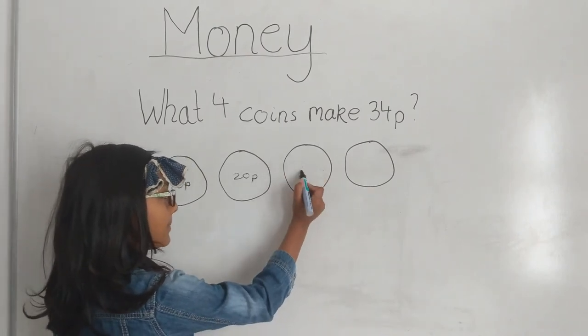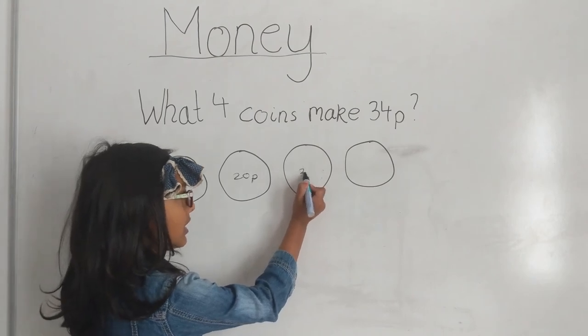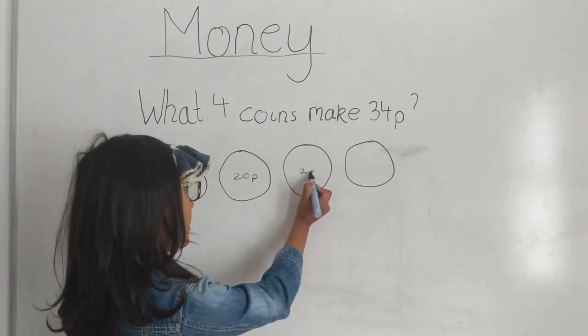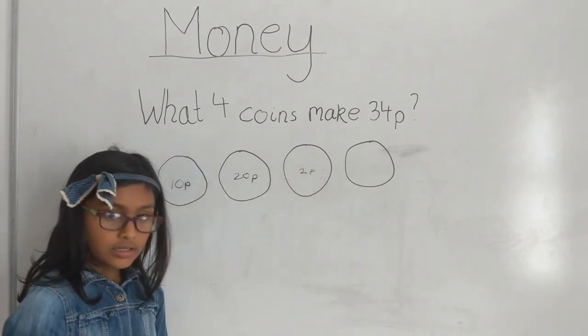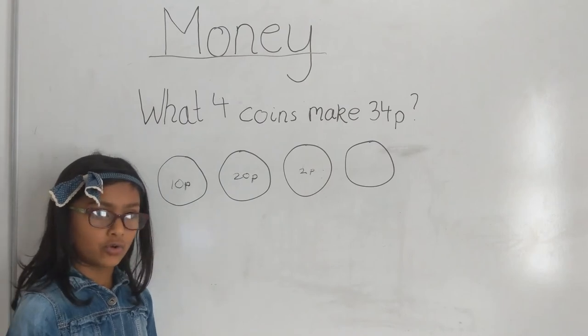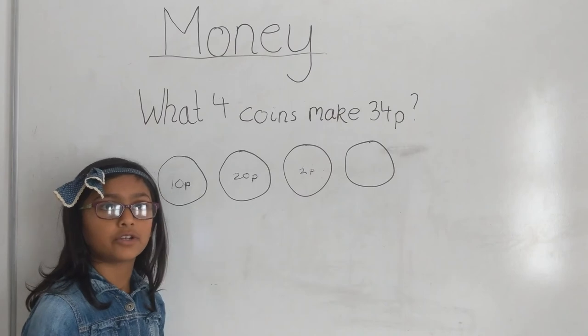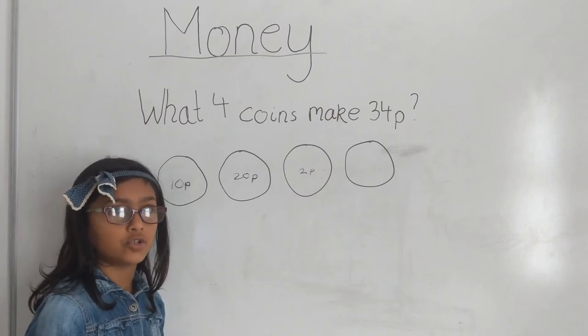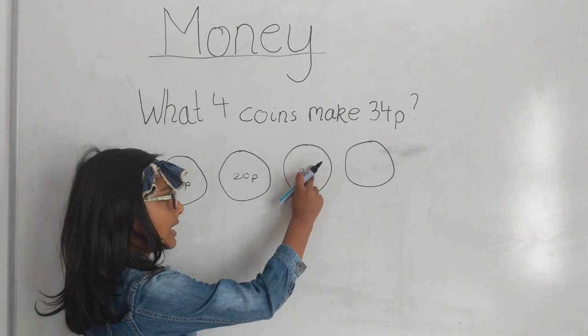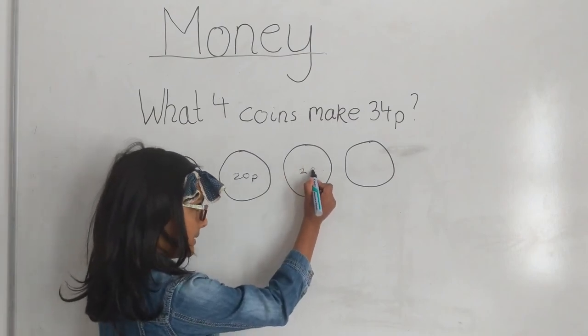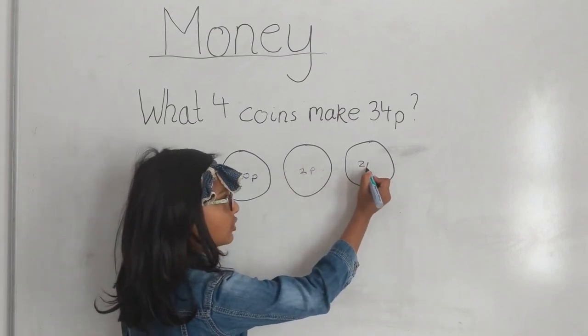We're going to do 2 separate coins which are 2p because we're doing 2 add 2, not 2 and then a separate 2. So we're doing 2 add 2 to make 4. So we have to make 4 so it's going to be 2p and 2p.